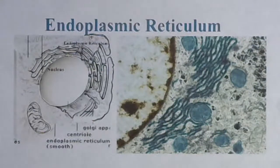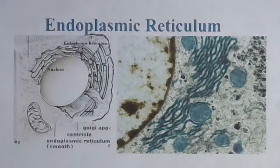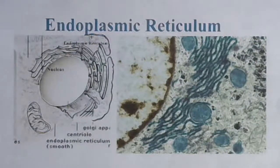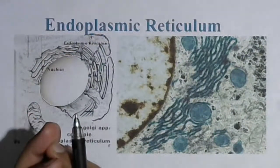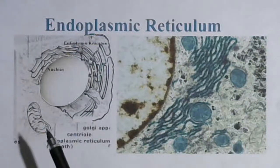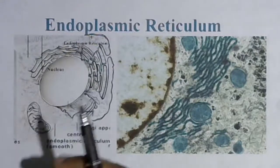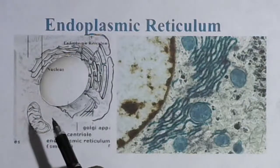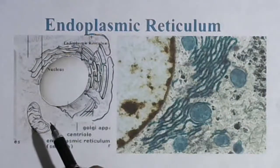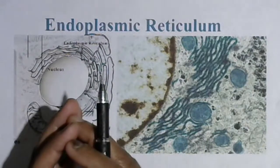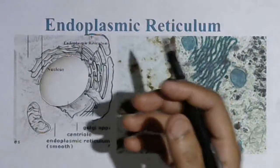Hi friends, welcome back to your favorite YouTube channel Simplified Biology. Today in this class I would like to discuss about what is endoplasmic reticulum, its types and functions. The endoplasmic reticulum is an important cell organelle where proteins, lipids, and steroid-like substances are produced. It was first discovered by Porter and was also named as argastoplasm by Garnier.